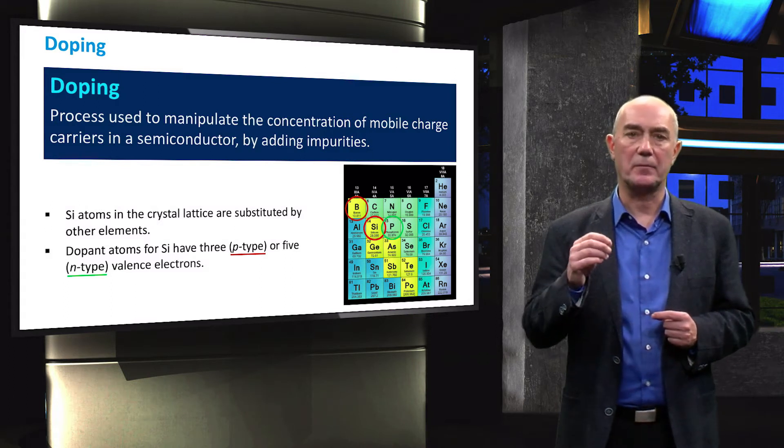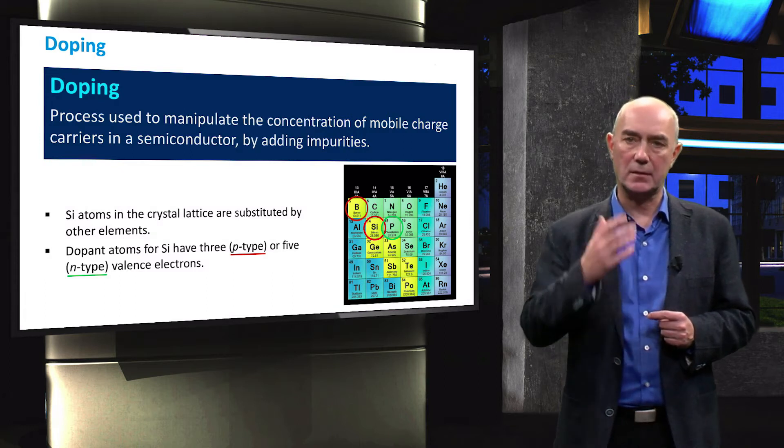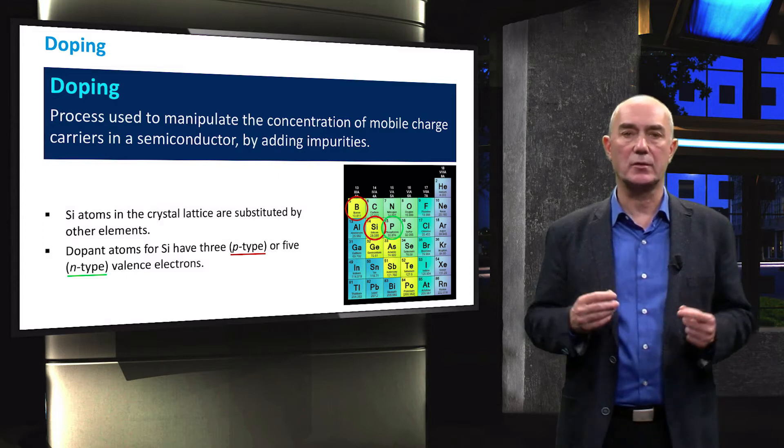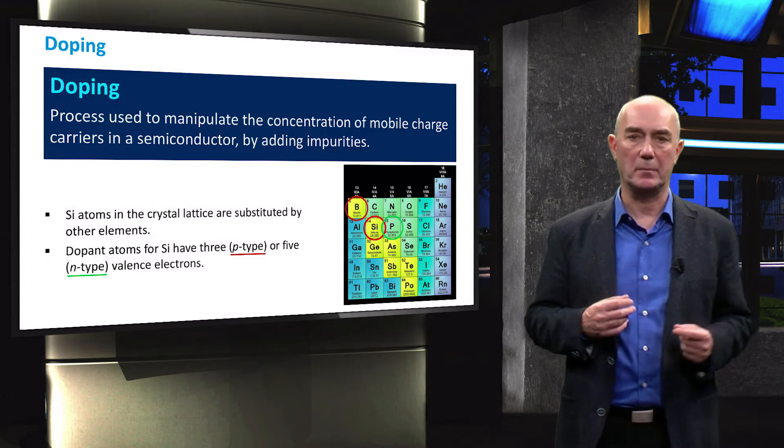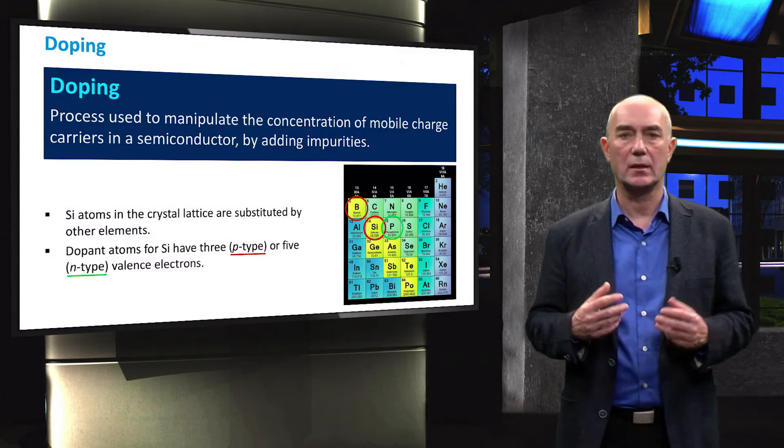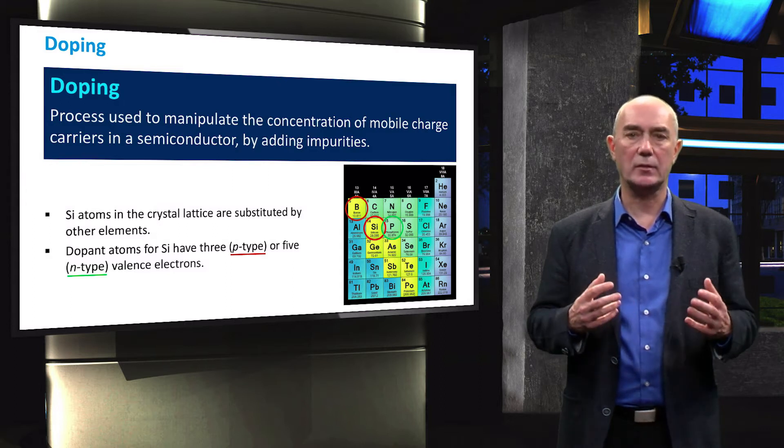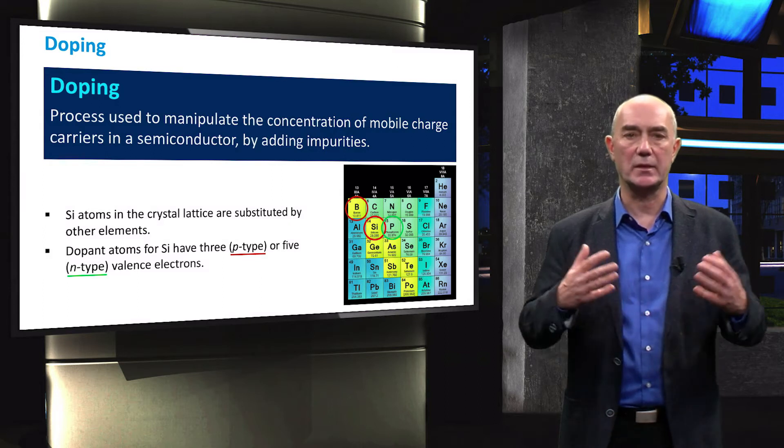A boron atom has three valence electrons while phosphorus atom has five valence electrons. When boron is used as a dopant, the resulting material is called p-type. When phosphorus is used, we call that material n-type. So what actually happens when we substitute silicon atoms with these impurities?